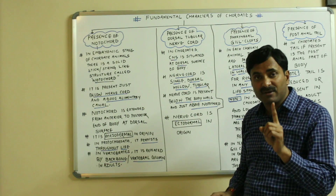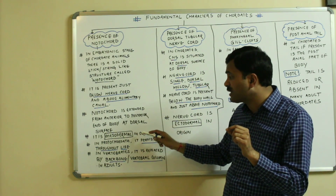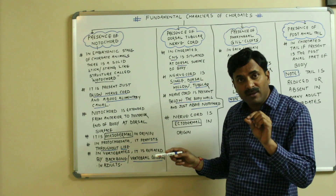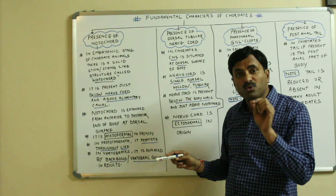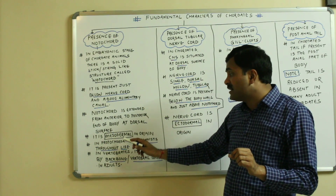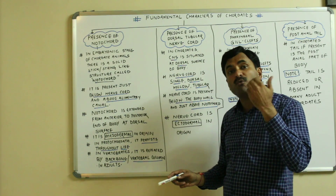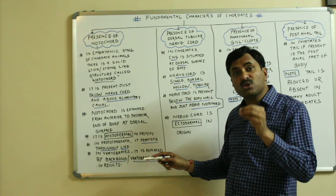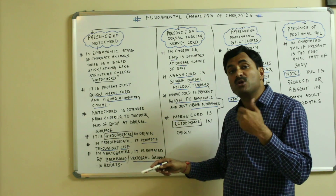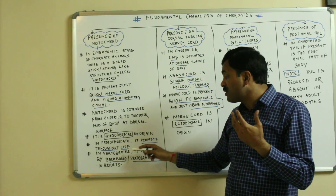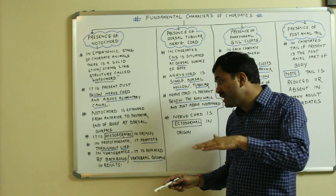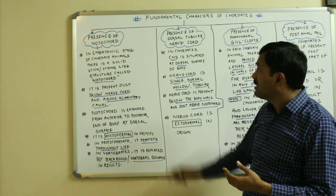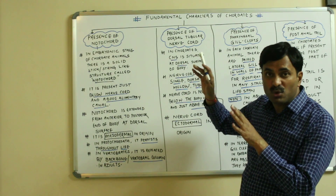One more thing: the notochord is mesodermal in origin. We know there are three embryonic layers — ectoderm, mesoderm, and endoderm. Always remember that notochord is mesodermal in origin. In protocordates or the lower, primitive chordates, the notochord persists throughout life, but in the case of advanced chordates — that is the vertebrates — the notochord is replaced by a backbone or the vertebral column in adults.